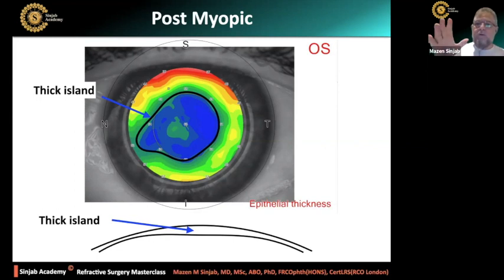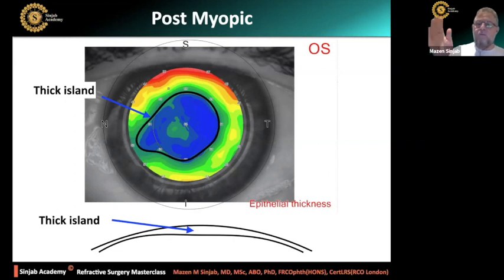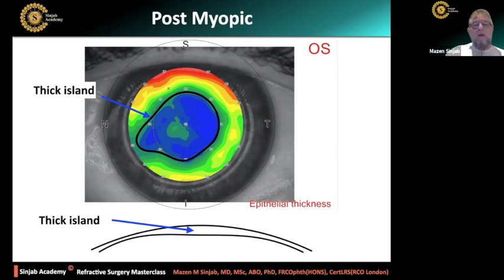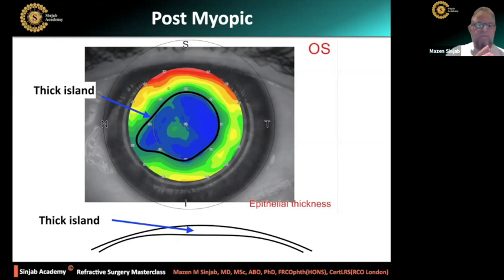Many doctors with high diopters think to go for 5 or 5.5 millimeters to treat minus 8 or minus 9, because the corneal thickness does not allow going for the standard 6.5 millimeter optical zone. In this case, we are creating a very small optical zone and very high regression — the patient will come back with high regression.